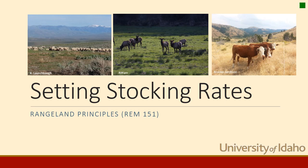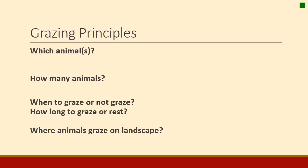I'm Karen Launchbaugh. We will talk about stocking rate, but there are other decisions that have to be made on the ground that fall in this general category of grazing principles. The first thing one decides when they go to the range is what kind of animal to graze. We're going to talk about livestock species, type, and age of animal.